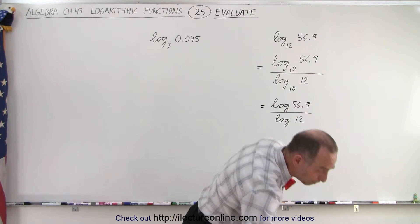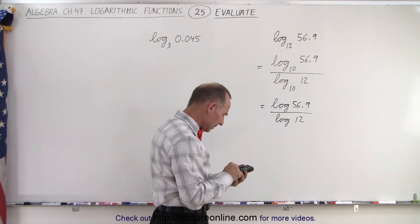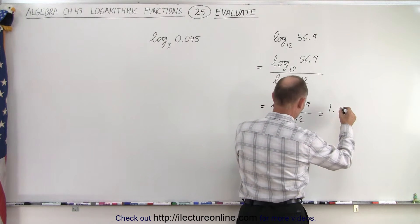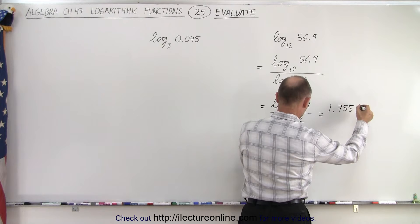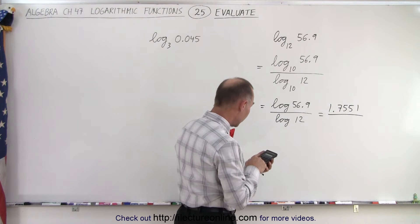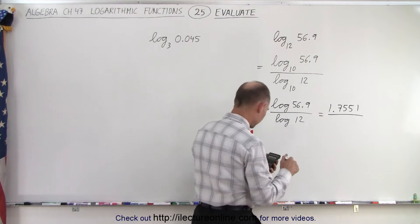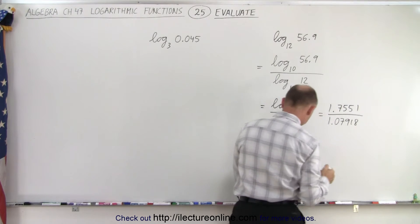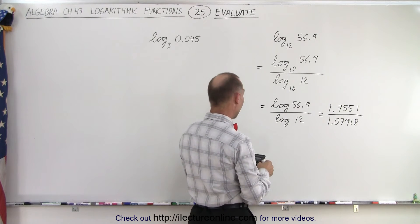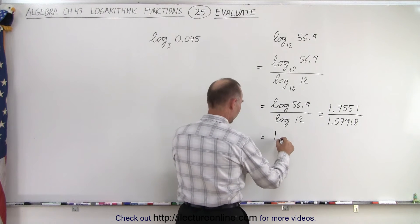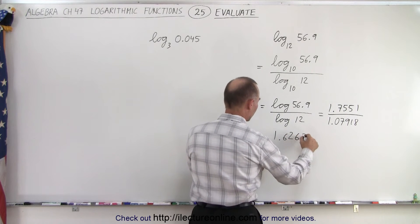Now our calculators can do that. So take 56.9 and take the log of that, which is 1.7551 — to four decimal places. Divide by 12, take the log, that would be 1.07918. And that equals 1.6263. And there you go.